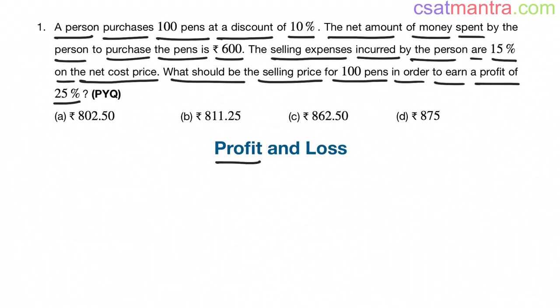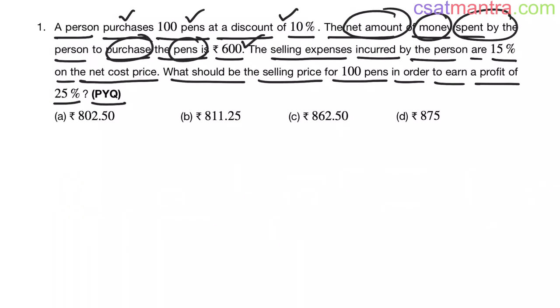This is a question from profit and loss chapter. It's a previous year question, bit tricky problem my friends. Pay attention. A person purchases 100 pens at a discount of 10%. That's okay. The net amount of money spent by the person to purchase the pens is 600 rupees. 600 is the net amount or net cost that person spent in purchasing the pens.